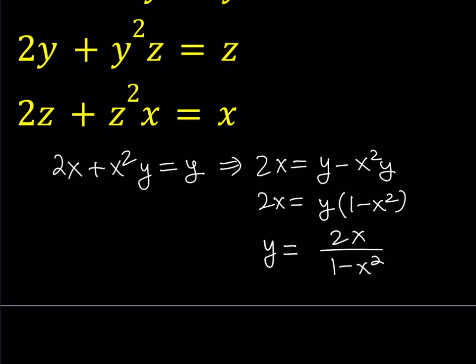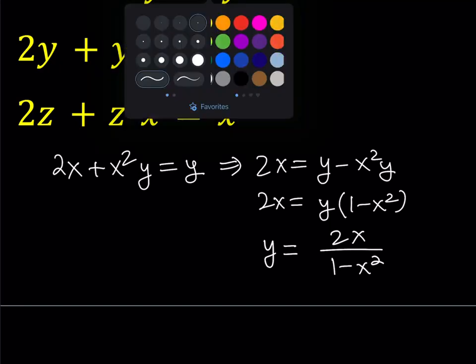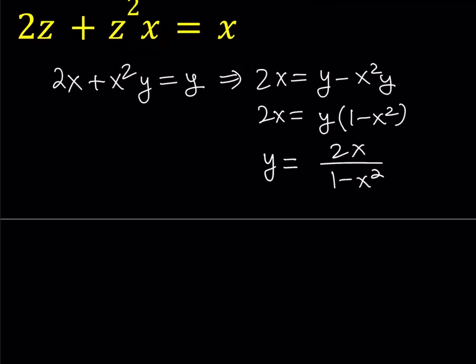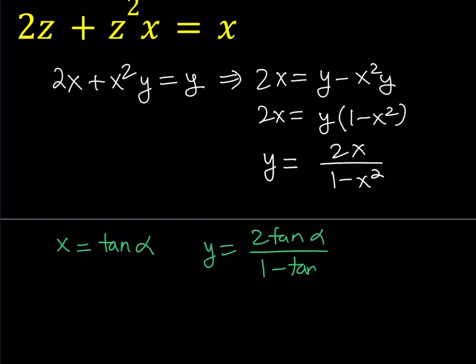This type of equation should give you a message, and that message is trigonometry. If you replace x with tangent alpha, you get y equals 2 tangent alpha over 1 minus tangent squared alpha. Doesn't that look like the double angle formula? It does — this is equal to tangent 2 alpha.